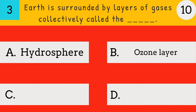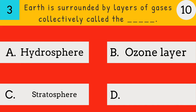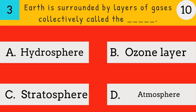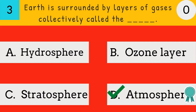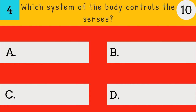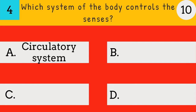Earth is surrounded by layers of gases collectively called the — hydrosphere, ozone layer, stratosphere, or atmosphere? The answer is atmosphere — Earth is surrounded by layers of gases collectively called the atmosphere.